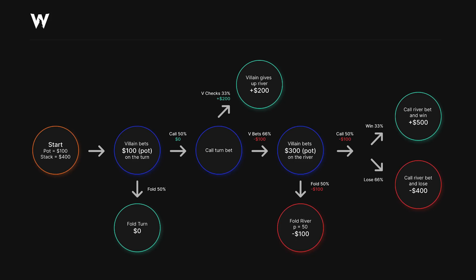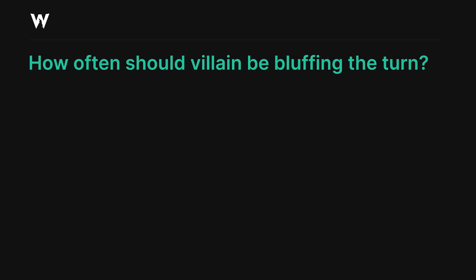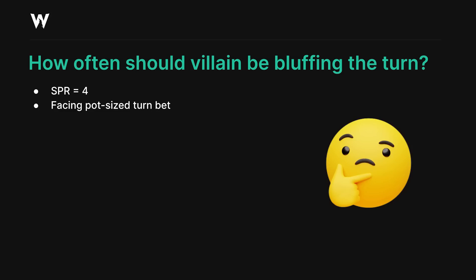If villain is not giving up on later streets, either they're over-bluffing and not taking their foot off the gas, or they were under-bluffing to begin with. Now: you understand how to calculate value-to-bluff ratios for one street and we've seen the power of leverage. How often should villain be bluffing the turn if 10 bluffs wasn't enough? The stack-to-pot ratio is 4, we're facing a pot-sized turn bet with another pot-sized bet behind, and villain starts with 20 nut combos. How many turn bluffs do they need to be balanced?